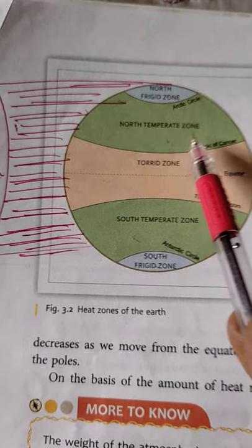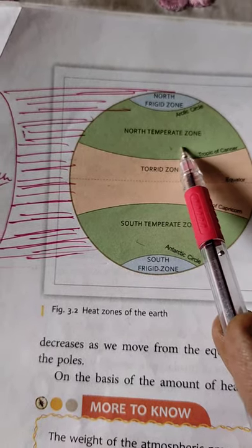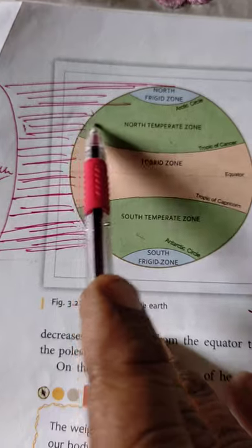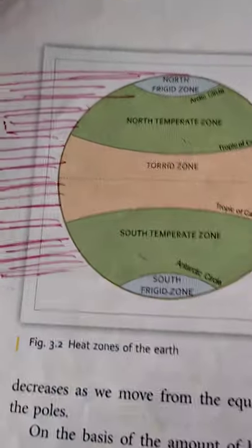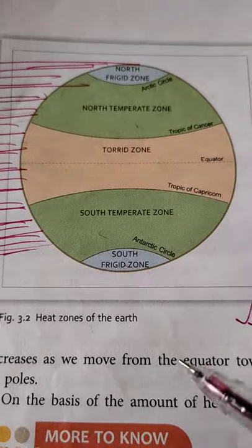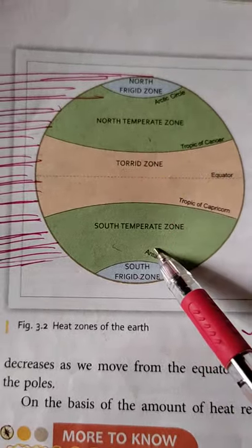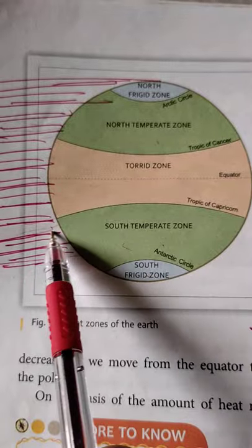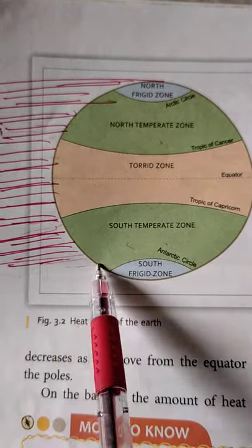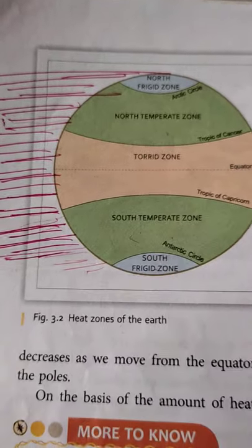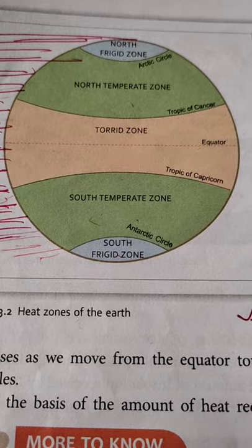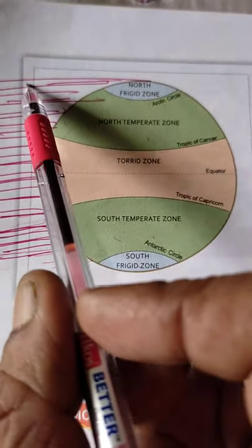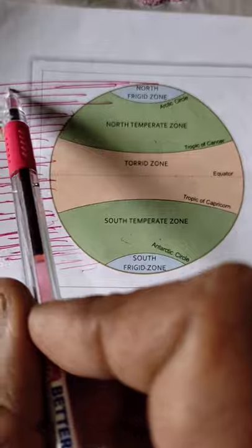Once we move to the Tropic of Cancer in the northern portion, this green portion is known as the temperate zone, because from here the sunlight starts traveling somewhat slanting. This portion is neither very hot nor very cold, and this is the same case in both the northern and southern hemisphere. The countries that lie in the north and south temperate zones are neither hot nor very cold.